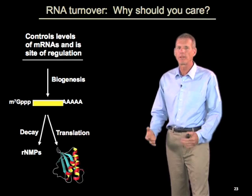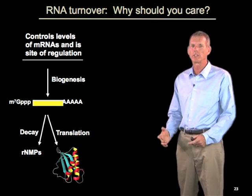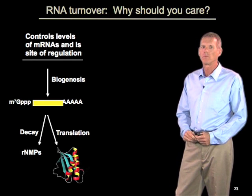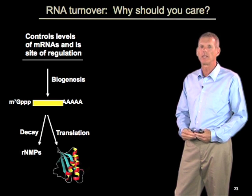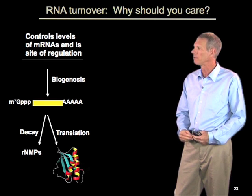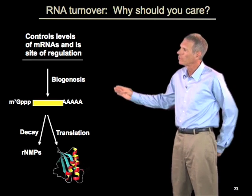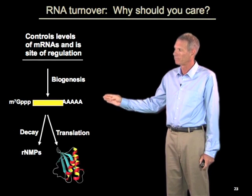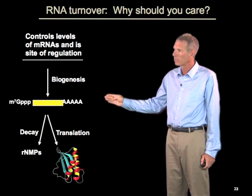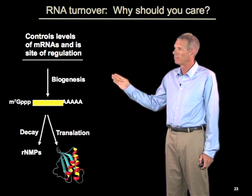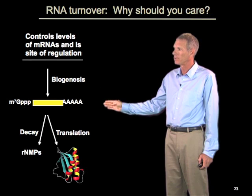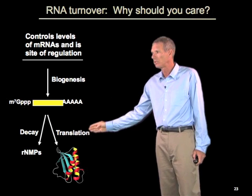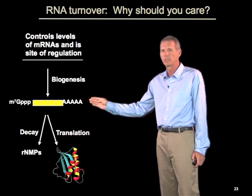Now, following translation, every mRNA eventually gets degraded. I'd like to emphasize three reasons why RNA turnover is actually an interesting area to look at. First, this controls the levels of mRNAs as a common site of regulation. Obviously, if you make RNAs at different rates, you'll have different concentrations, but the rate at which they are degraded has a tremendous influence on the steady-state pool.